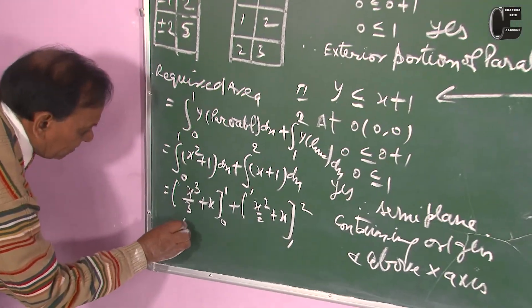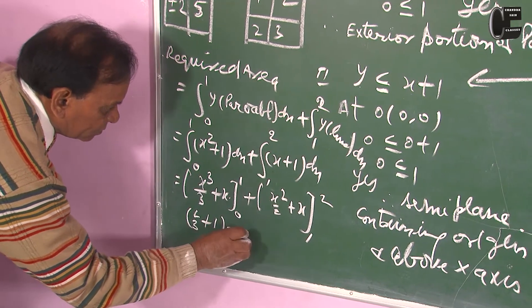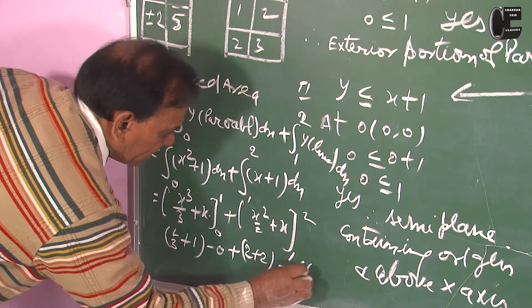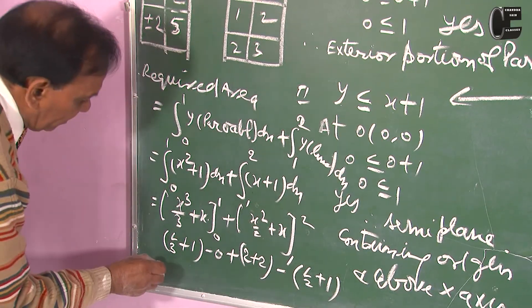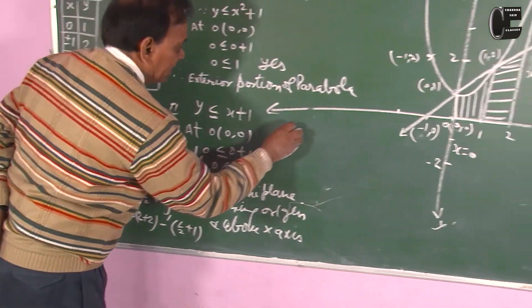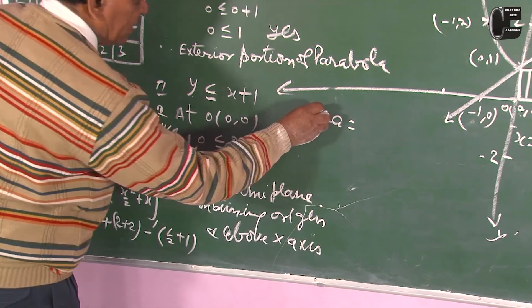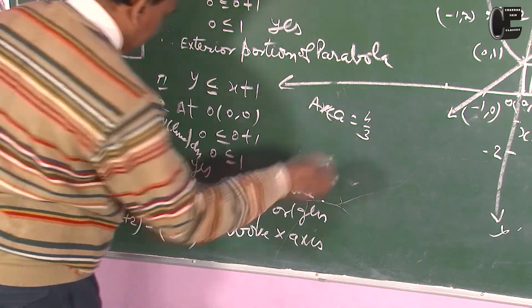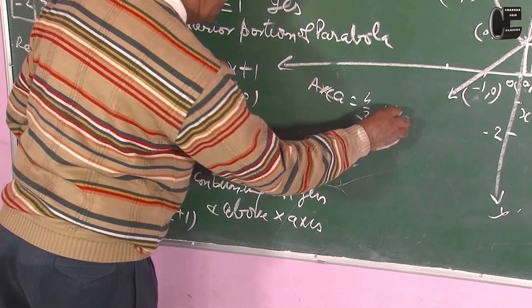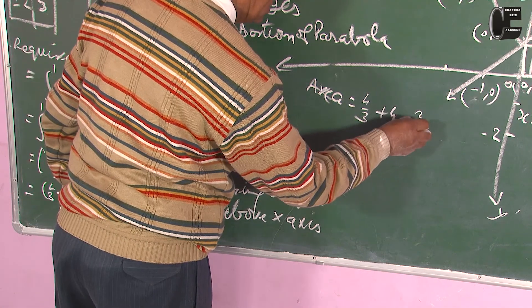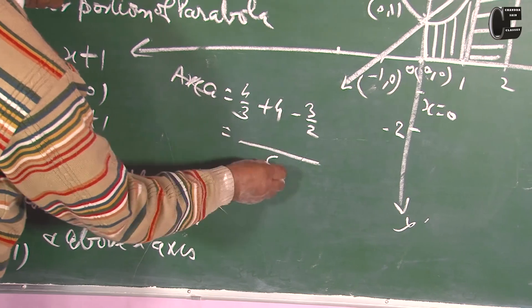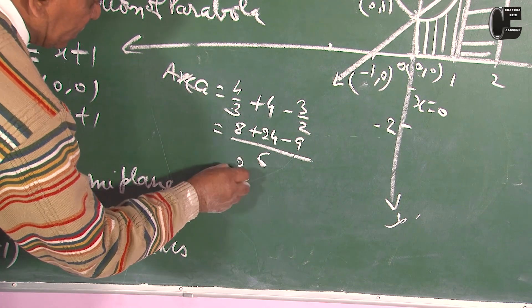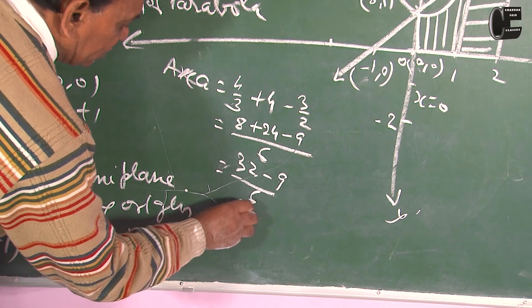Upper limit for the first integral: 1/3 plus 1 equals 4/3, minus 0. For the second integral: 4 by 2 plus 2 minus 1/2 plus 1. Taking LCM 6: we get 8 plus 24 minus 9 over 6, which gives 32 minus 9 by 6, that is 23 by 6 square units.